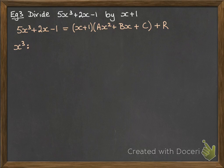Now, that remainder would be some sort of constant. OK, so comparing the coefficients of x cubed, we get 5 on the left and a on the right.